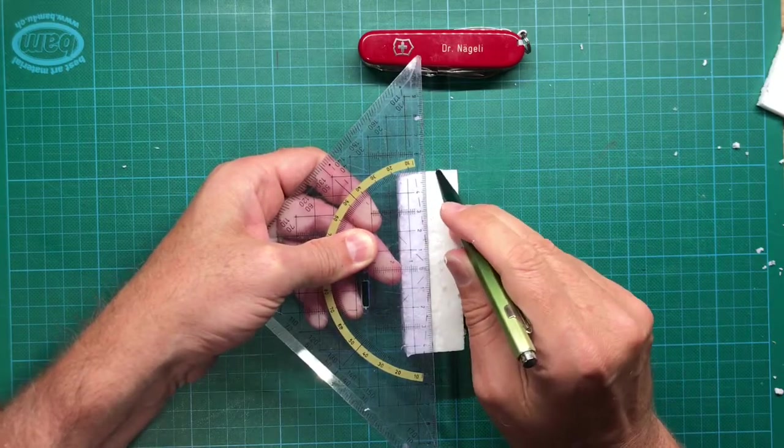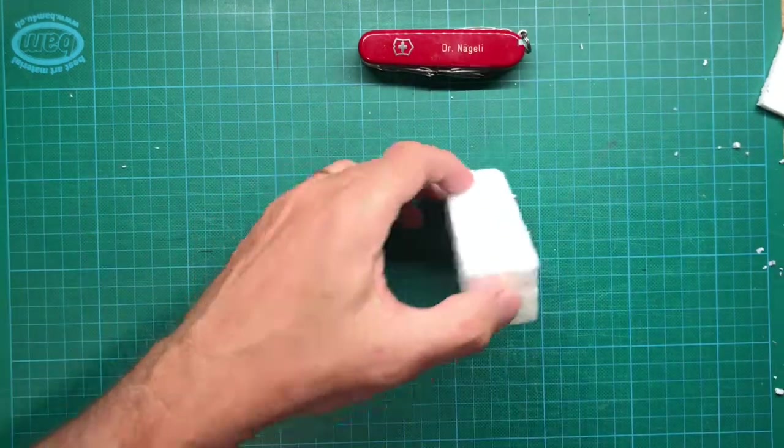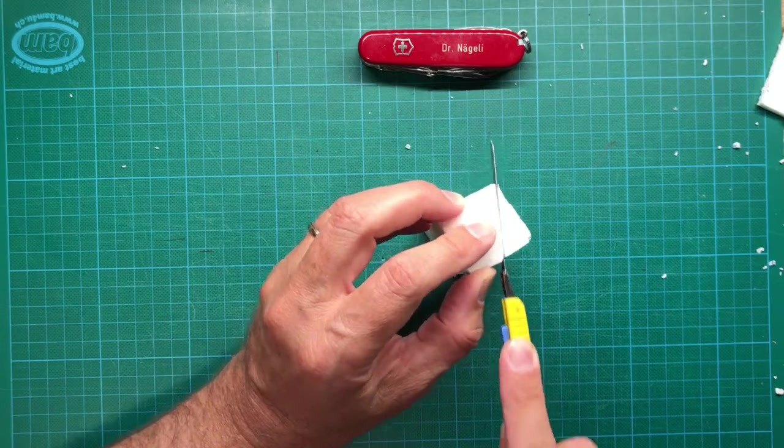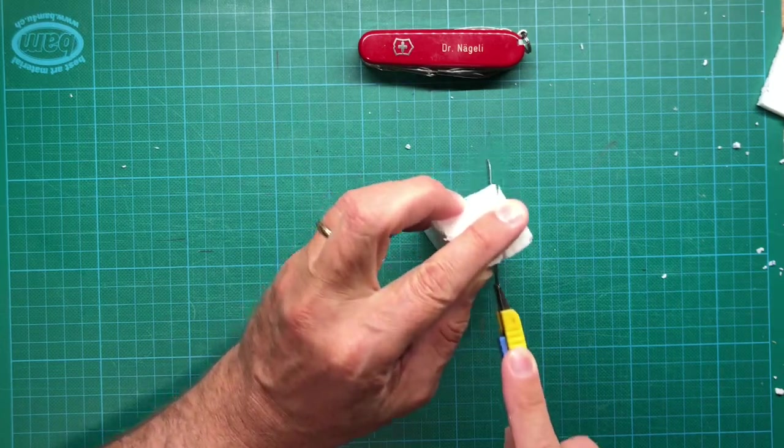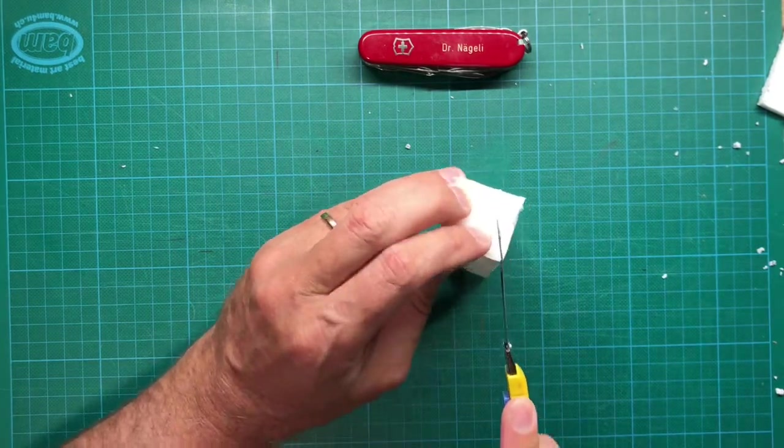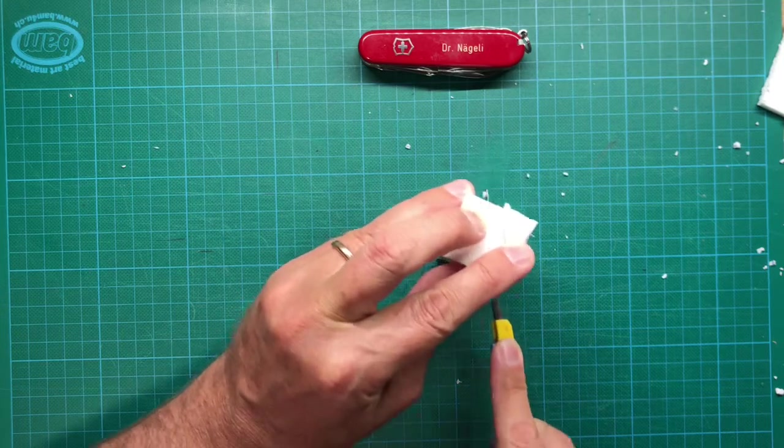Now mark the center of the styrofoam block. And with the knife, you cut the styrofoam block into this triangular shape to fit the chocolate bar envelope.